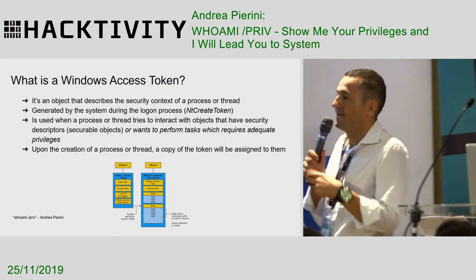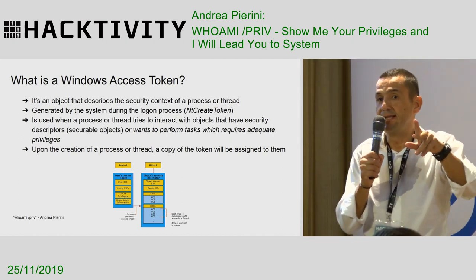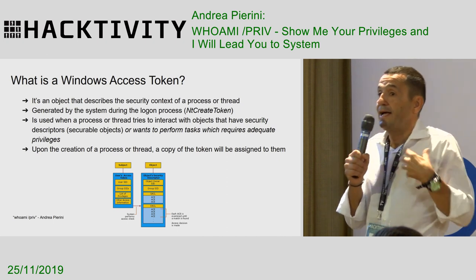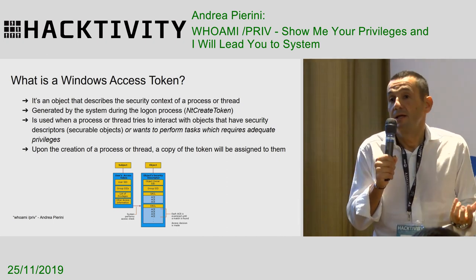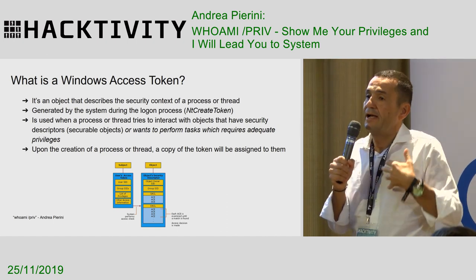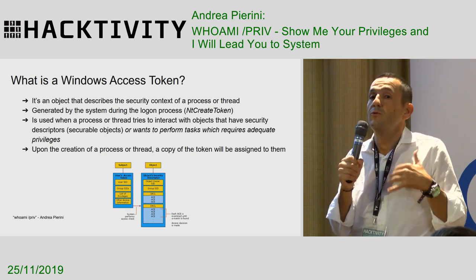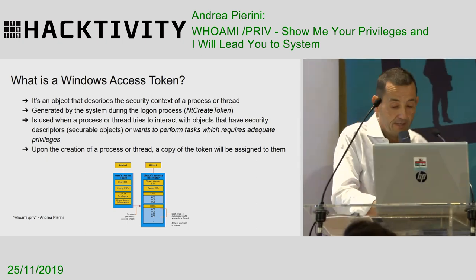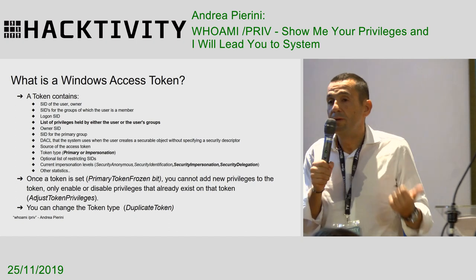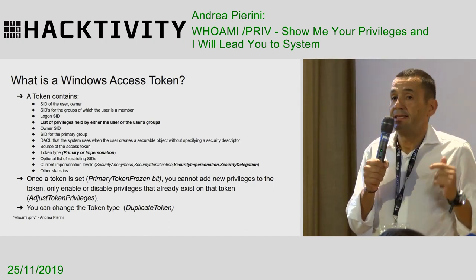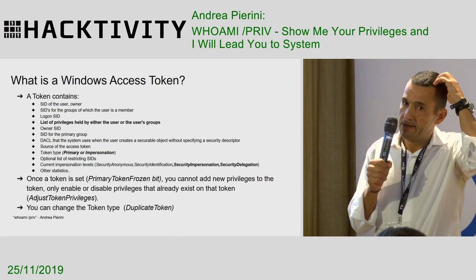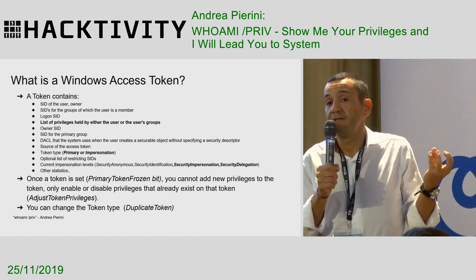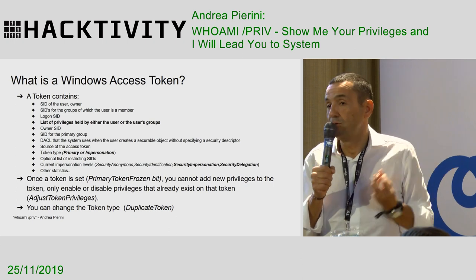Windows access tokens — why do I speak about them? Because they are closely linked to privileges. Privileges are assigned to the token when I log on to the system. When I log on, a special token will be assigned to me, and each time I spawn a process or a thread, a copy of this token will be made. The token contains a lot of information: members, group memberships, and the list of privileges granted to me. So when I have a token with elevated privileges and I can impersonate this token, I will automatically have all these privileges.